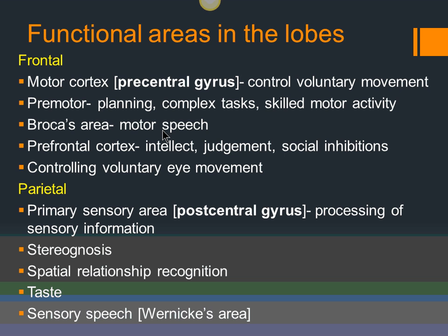A student asked whether autism relates to this area. Autism is not just the frontal part — it involves connections between various areas not working properly, which is more complex. Regarding stroke: a stroke is basically a brain attack, either from hemorrhage or loss of blood supply. If the motor cortex is damaged, voluntary movement on the opposite side of the body will be lost.